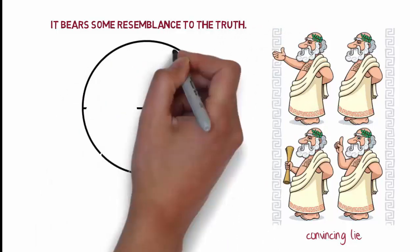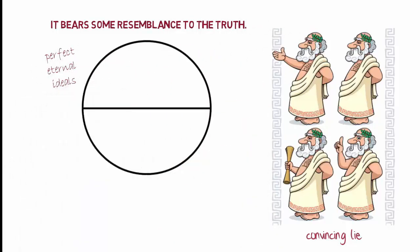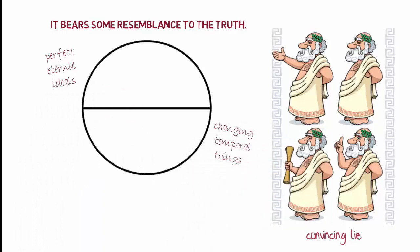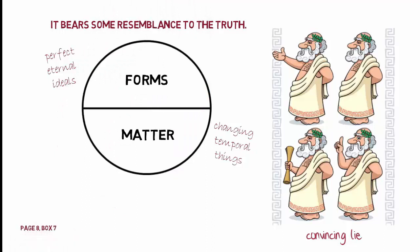Plato viewed the world in terms of unchanging, eternal, perfect ideals that stood in contrast to changing, temporal, and imperfect things that came and went with the passage of time. He referred to the physical, temporal things in life as matter and the eternal ideals as forms.